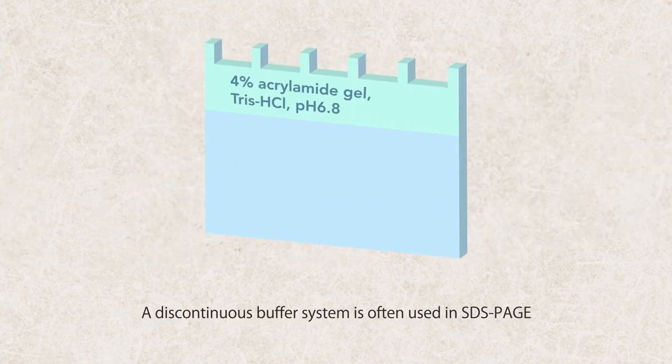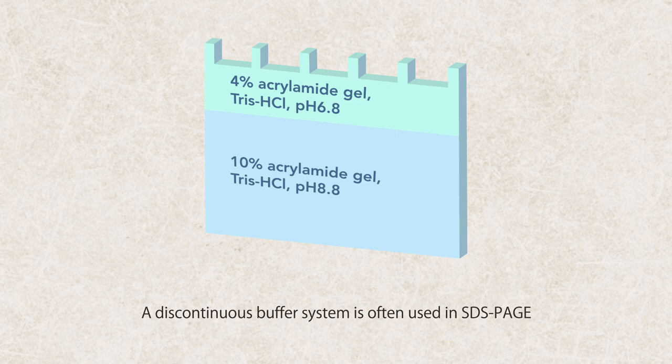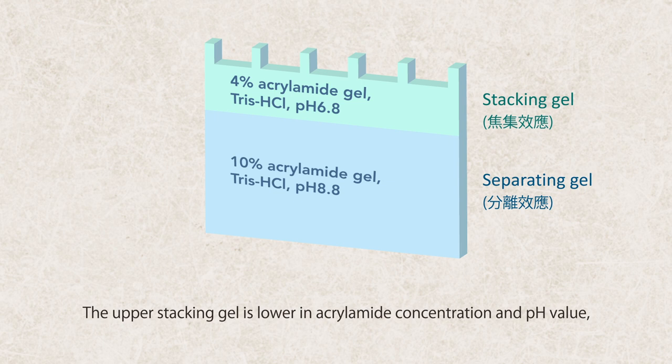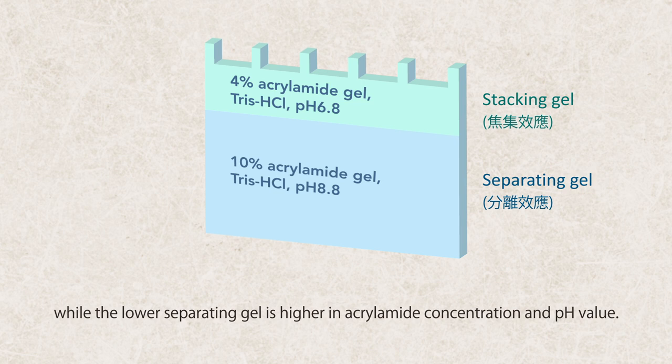A discontinuous buffer system is often used in SDS-PAGE to create a stacking effect on the upper gel before proteins enter the lower separation. The upper stacking gel is lower in acrylamide concentration and pH value while the lower separating gel is higher in acrylamide concentration and pH value.